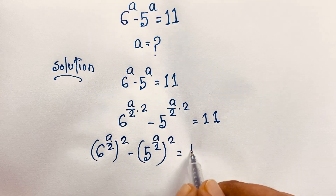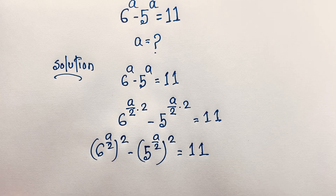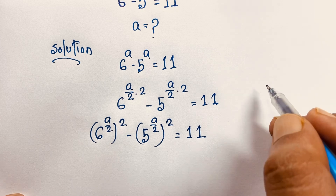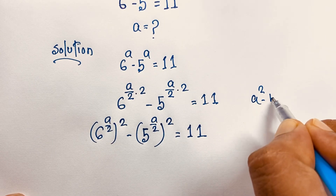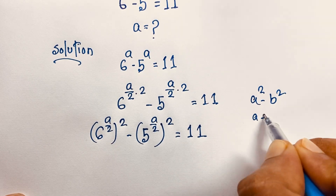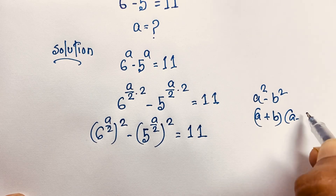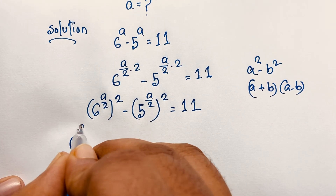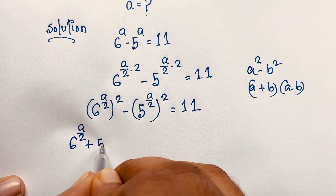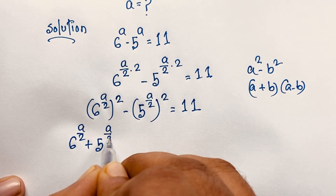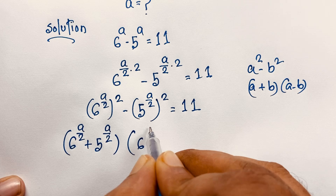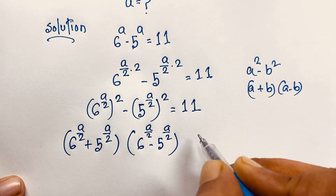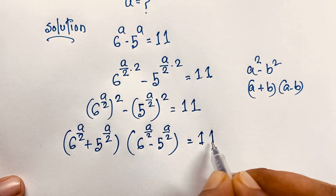According to the identity a squared minus b squared equals (a plus b)(a minus b), I apply this formula here. It becomes: 6 to the power (a over 2) plus 5 to the power (a over 2), times 6 to the power (a over 2) minus 5 to the power (a over 2), is equal to 11.